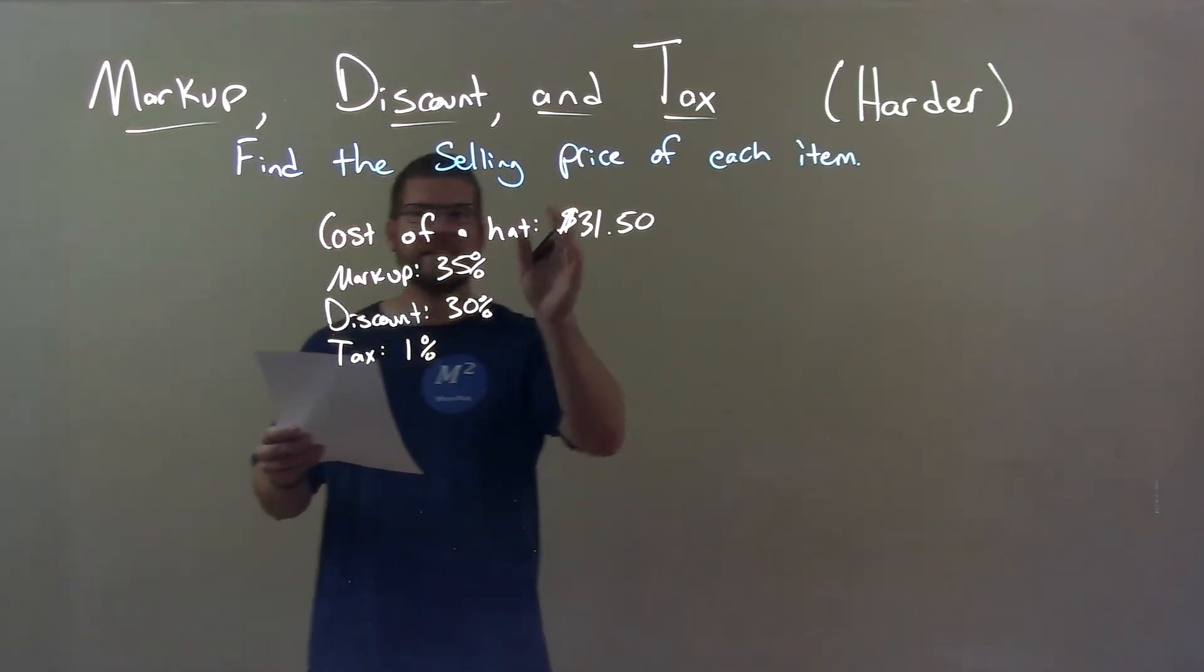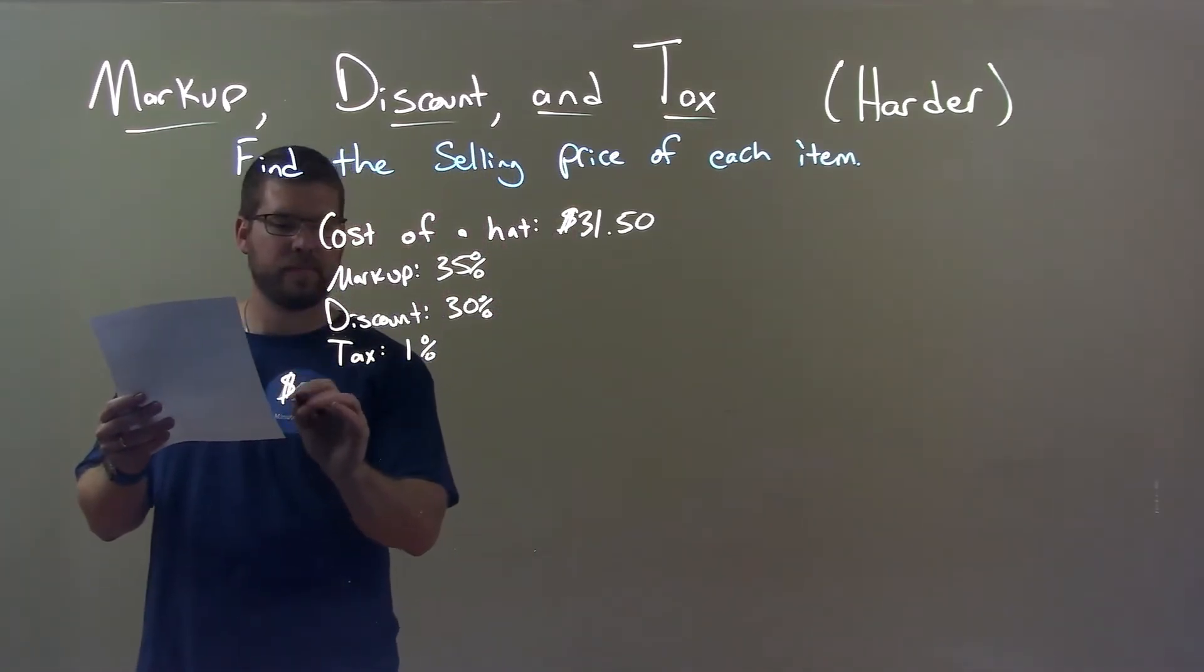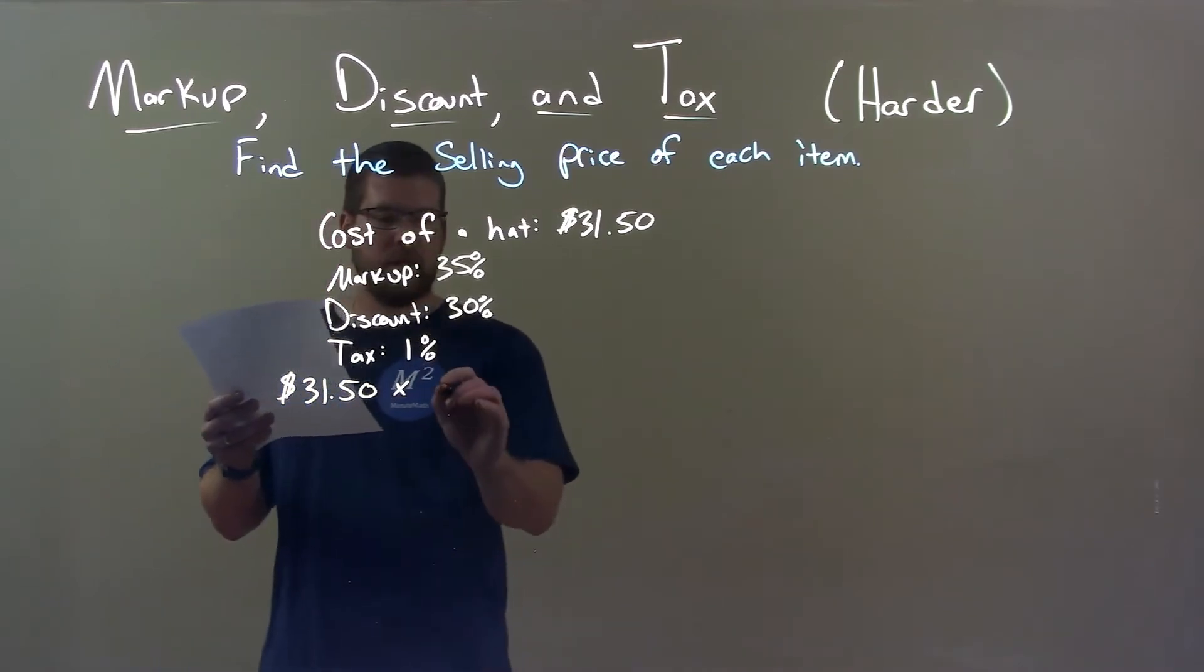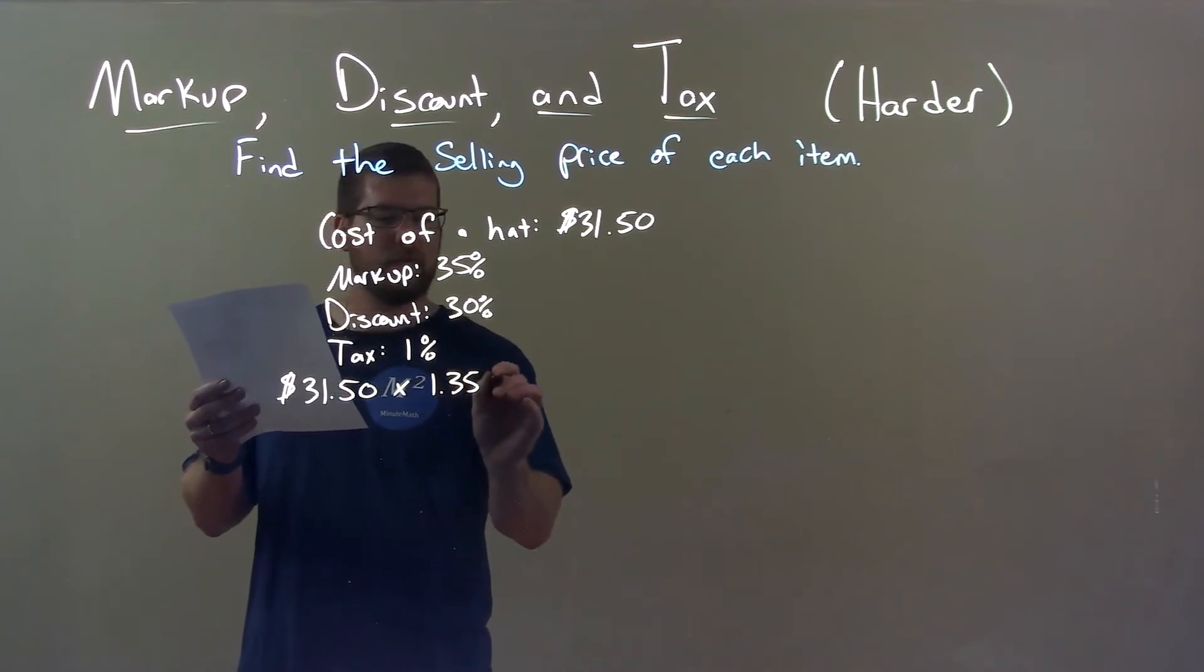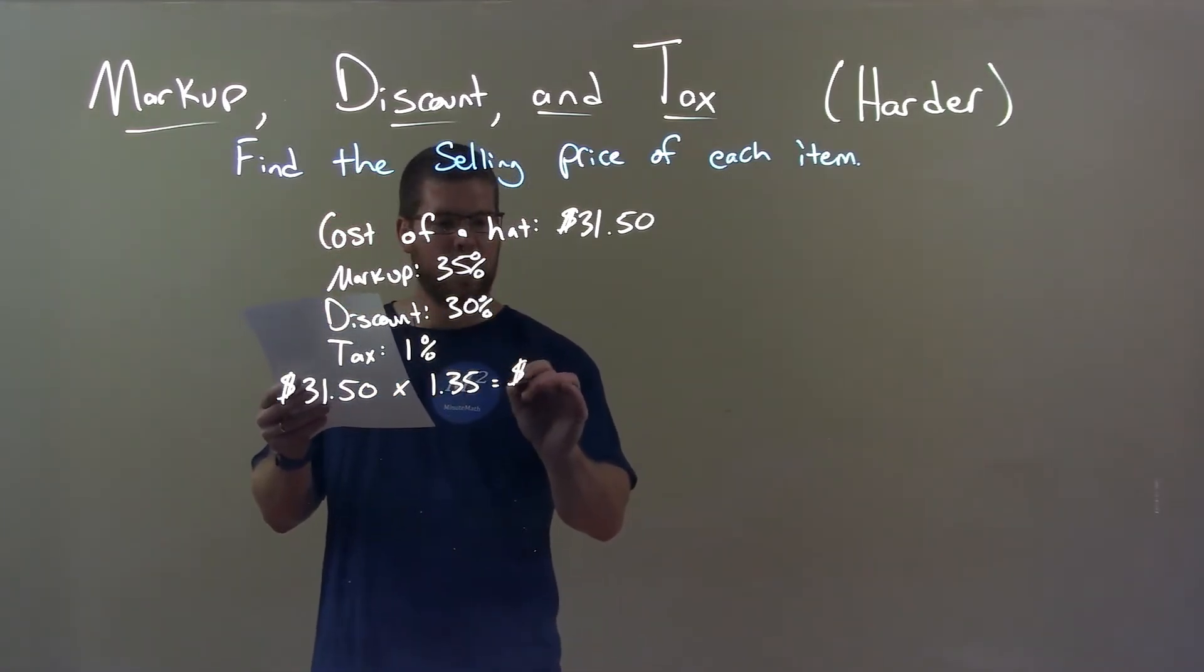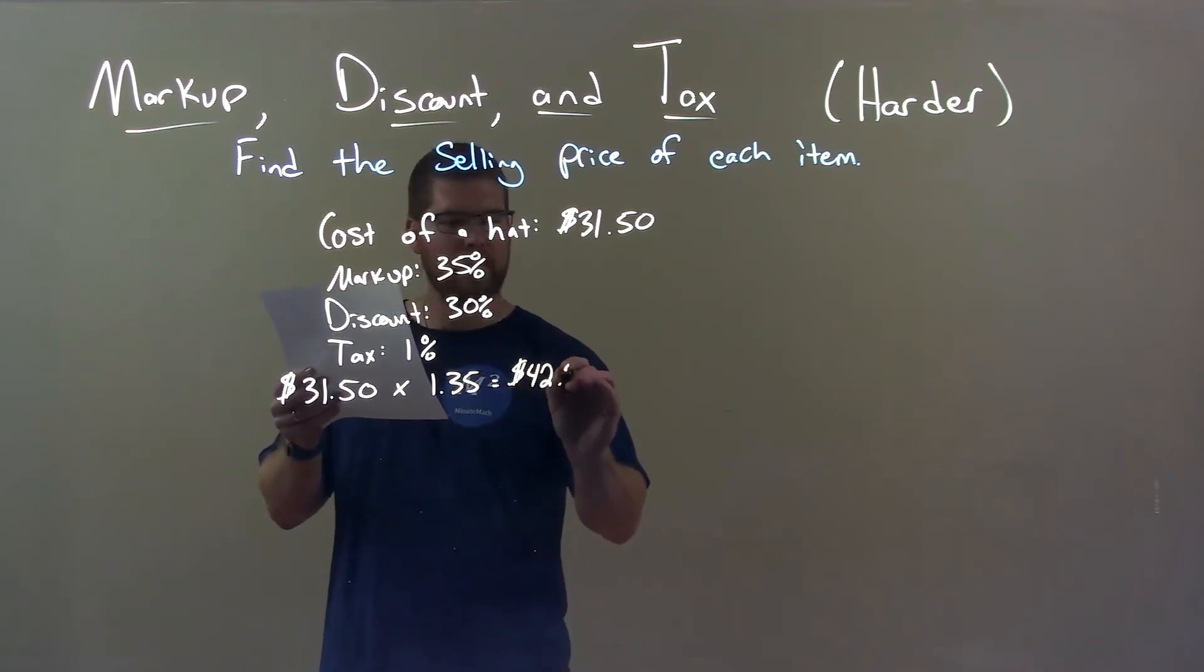Well, first we take the cost of the hat and multiply by its markup 35%, decimal 1.35. That's how we multiply our markup here. That comes out to be $42.53.